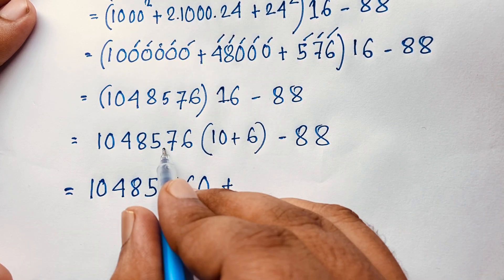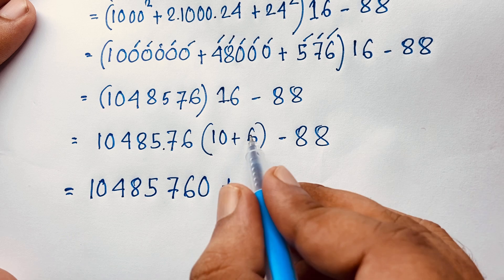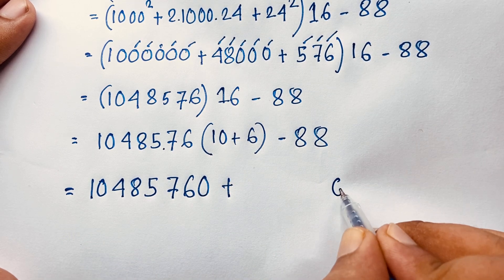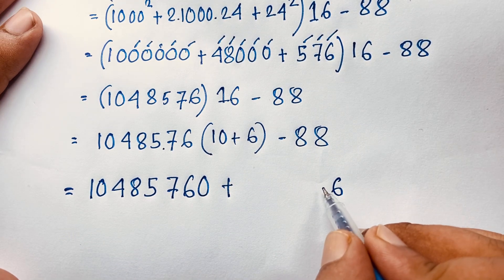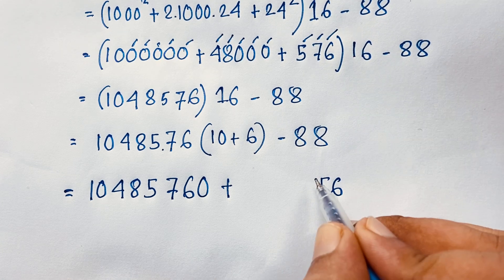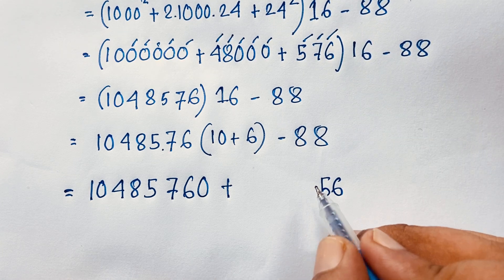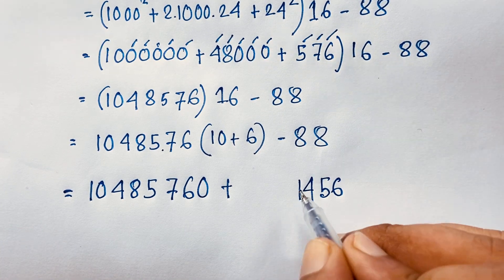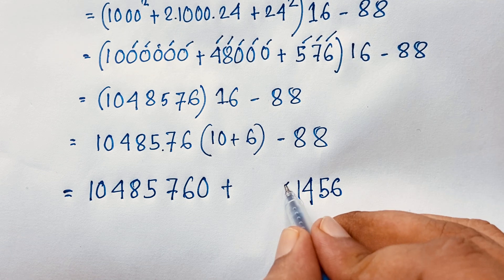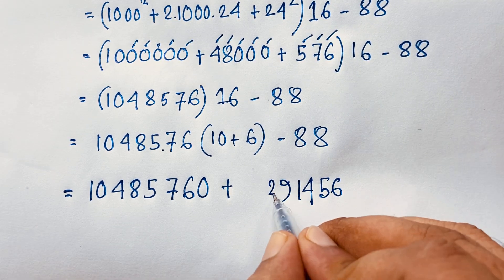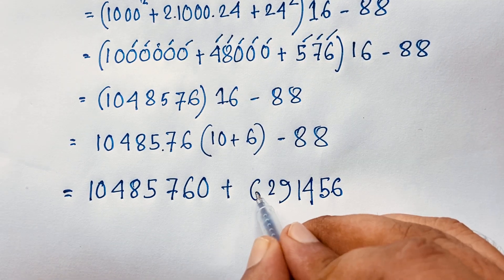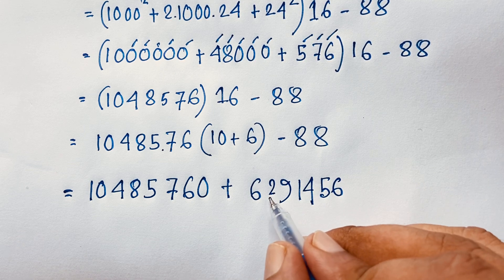Plus 6 times 1,048,576 — so 6 times 6 it will be 36. So I take here is 6, then 5, then 4, then 1, then 4, then 1, then here is 9, this is 2.